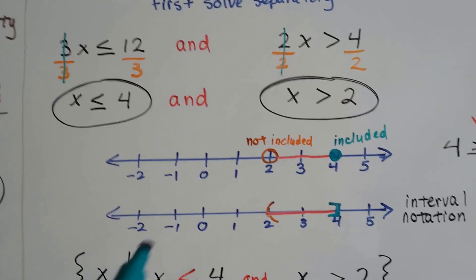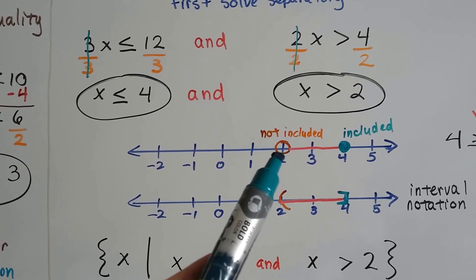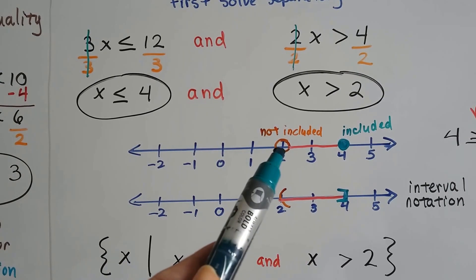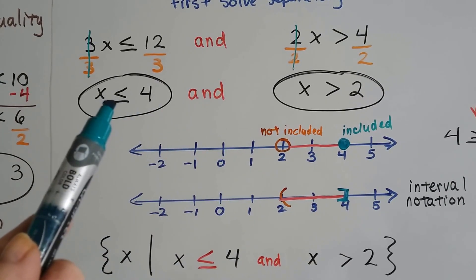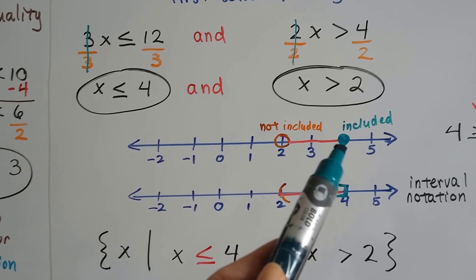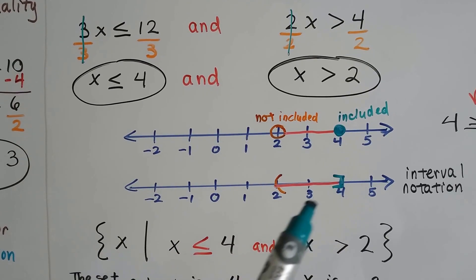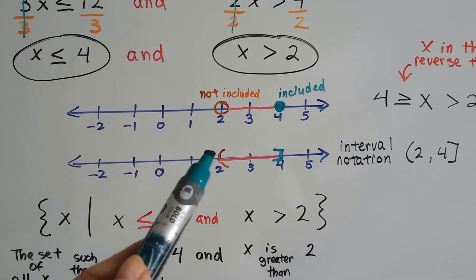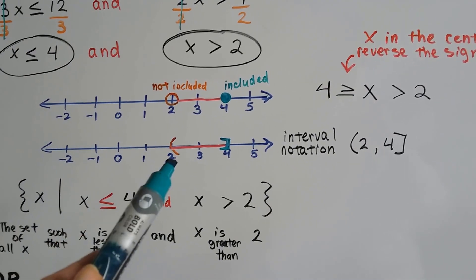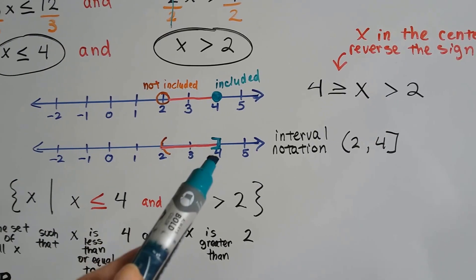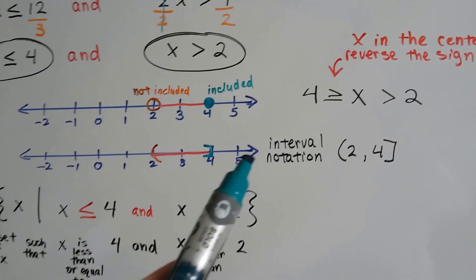Now we can graph it. This 2 is not included. Because it's greater than 2 and it's less than or equal to 4, the 4 is included, so we have an open dot here and a closed dot there. In interval notation, it would be a parentheses here to show not included and a bracket here to show it is included.